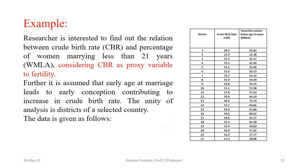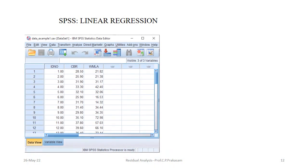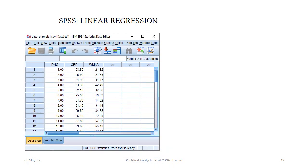Here we will illustrate with an example how to calculate the outliers and identify the residuals. A researcher is interested to find out the relation between crude birth rate (CBR) and percentage of women marrying less than 21 years (WMLA), considering CBR as a proxy variable for fertility. It is assumed that early marriage leads to early conception, contributing to an increase in crude birth rate. The unit of analysis is the district of a selected country.